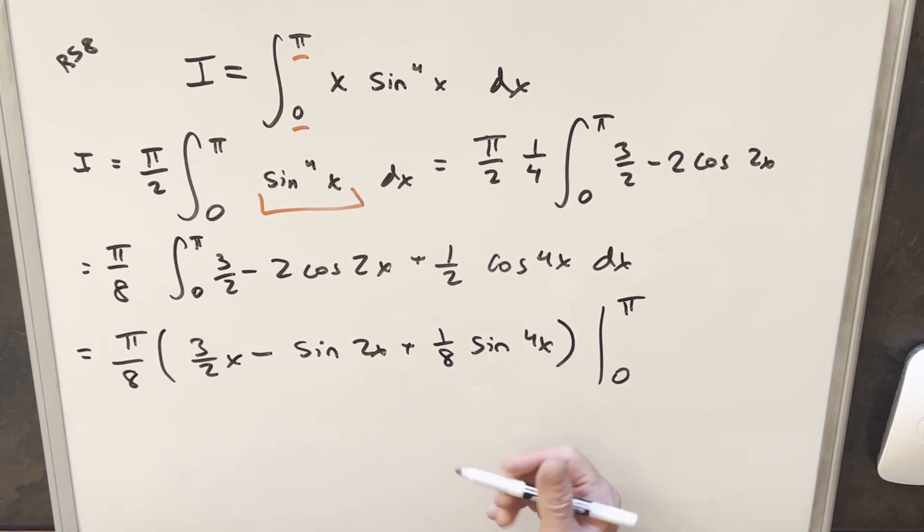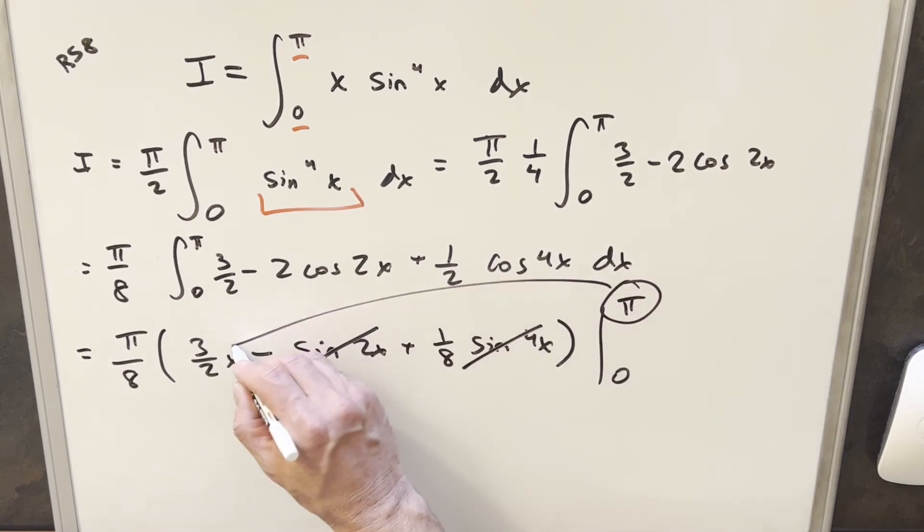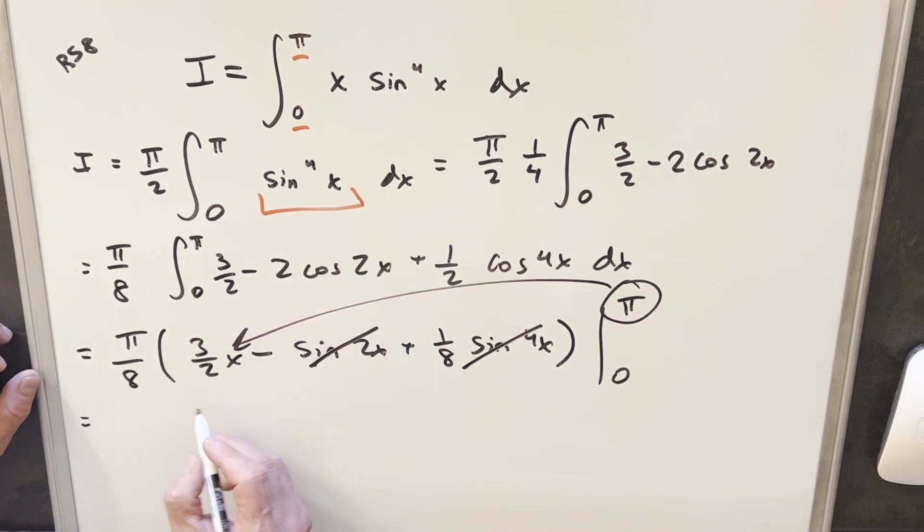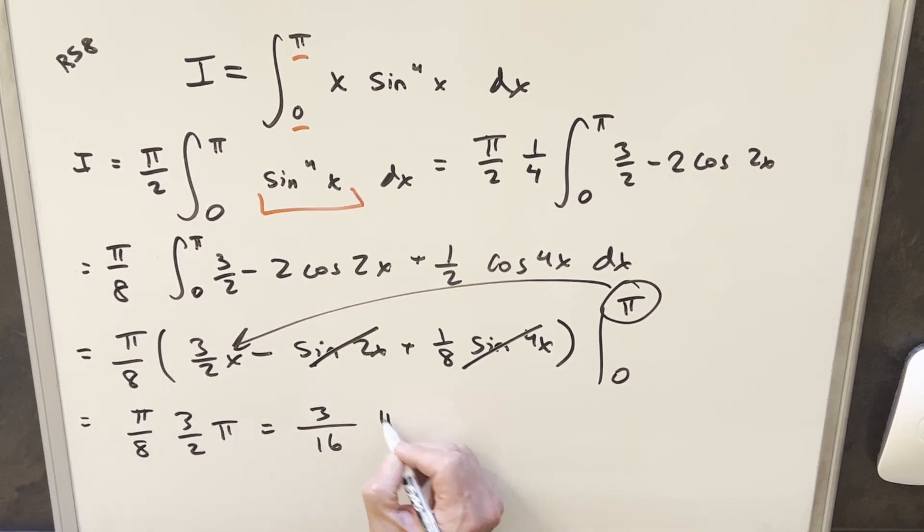And we plug pi in for sine of 4x, this is going to zero. And we plug pi in here, this is going to zero. So we just need to take our pi and plug it in right here. And so this is going to give me pi over eight times three over two pi. So we'll just multiply that together and we get three over 16 pi squared.